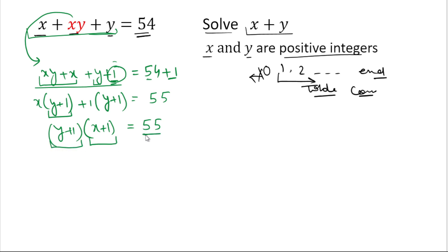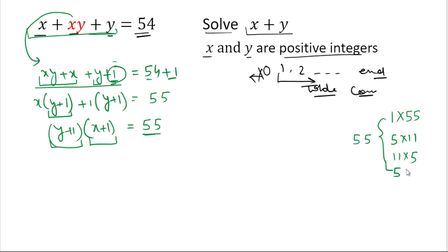The factors of 55 are: 1 times 55, 5 times 11, 11 times 5, and 55 times 1. The first and the fourth will give the same values for x plus 1 and y plus 1.